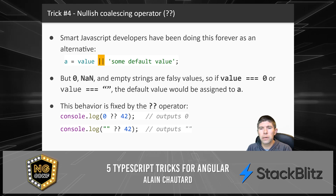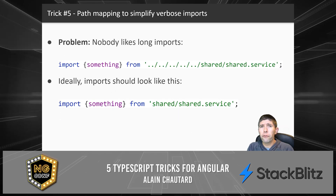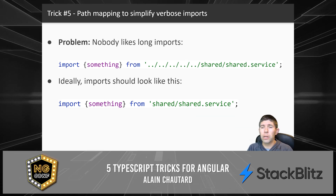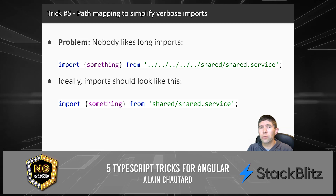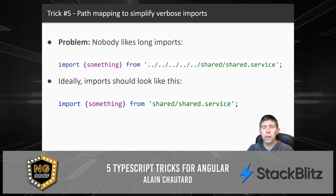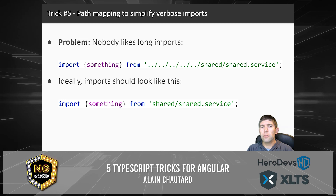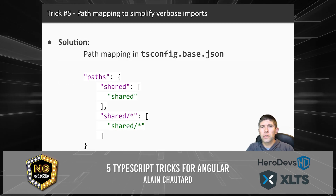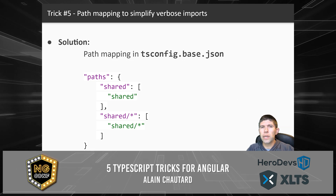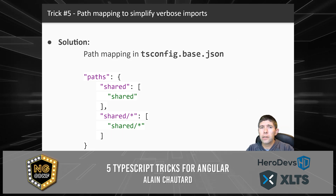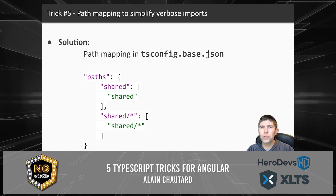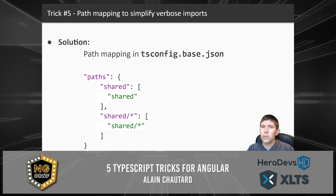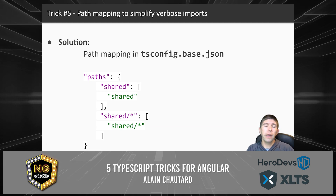The final trick is path mapping, because nobody likes very long imports like 'import something from ../../..'. Instead, we want them short and sweet. The solution is to edit your tsconfig file and add all of the paths you want to shorten. Once done, you can use these shorter import names in your code and the compiler will know where to find those folders.